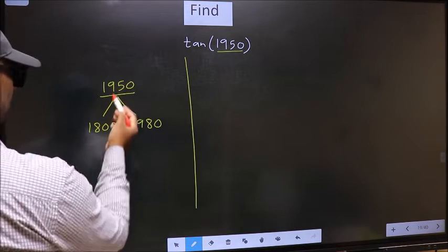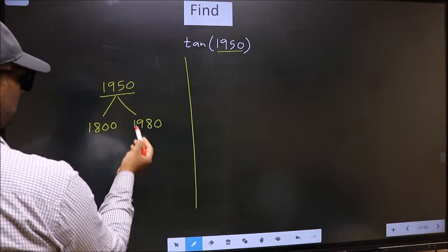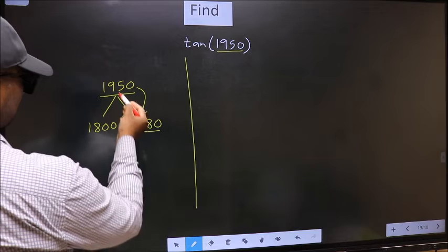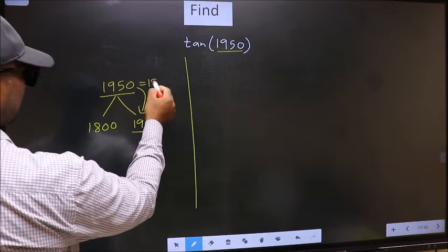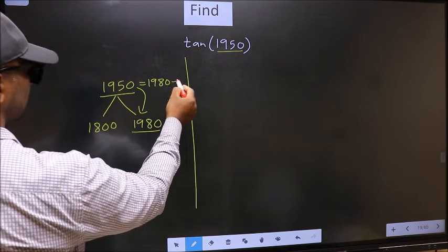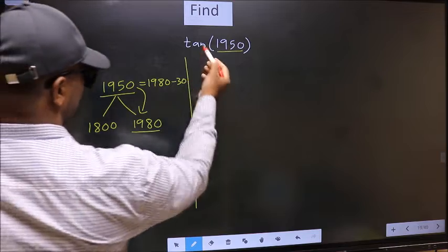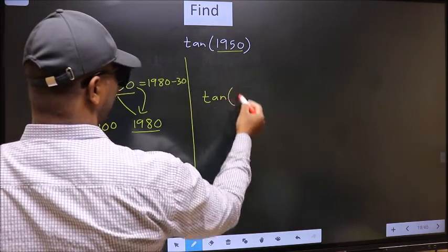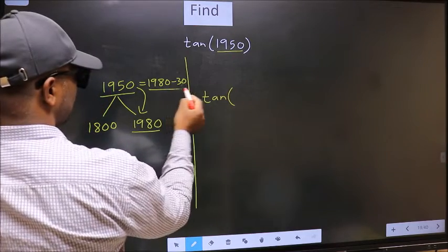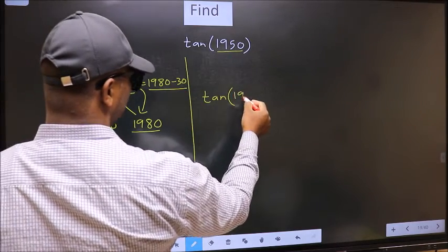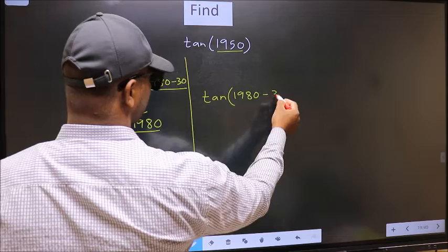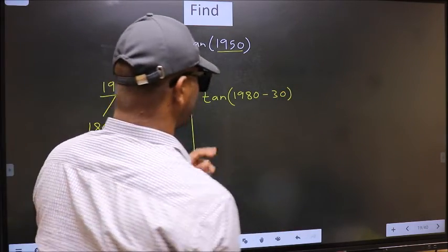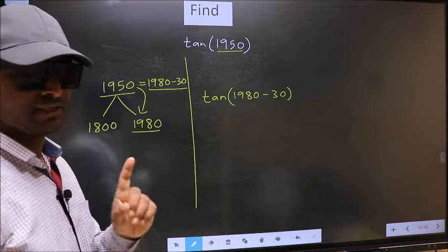Next, 1950 is close to which number? This is close to 1980. So in place of this, we write 1980 minus 30. This will become tan(1980-30). This is your step 1.